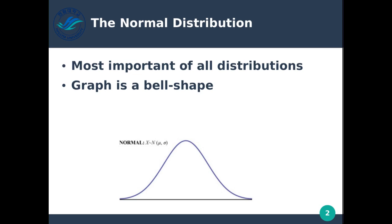If we think about heights, for example, and measured everyone's height in this class, the distribution of heights would also be normally distributed — with the average somewhere in the center, very few people extremely tall, very few extremely short, and most landing in the middle. Most things we measure tend to end up with a bell-shaped or normal distribution curve, and we will use it more in this class and in advanced statistics next semester.